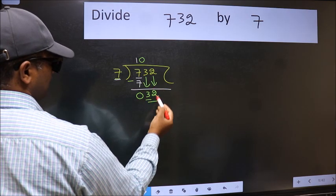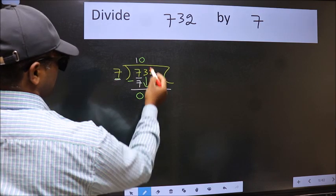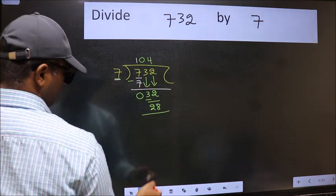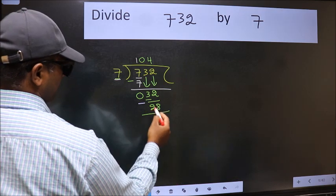Now 32. A number close to 32 in the 7 table is 7 fours 28. Now we should subtract. We get 4.